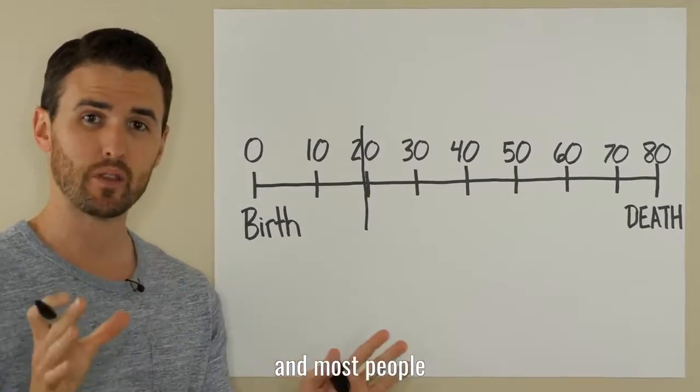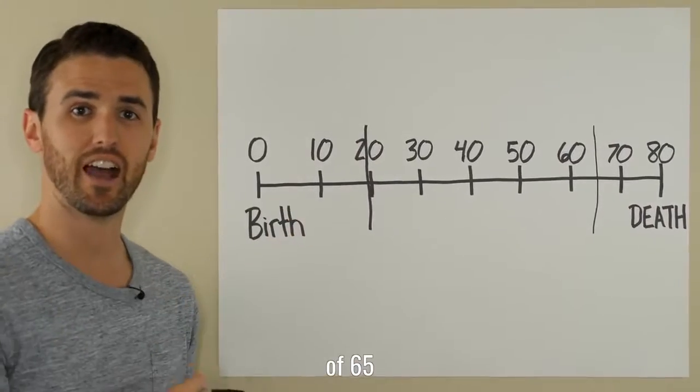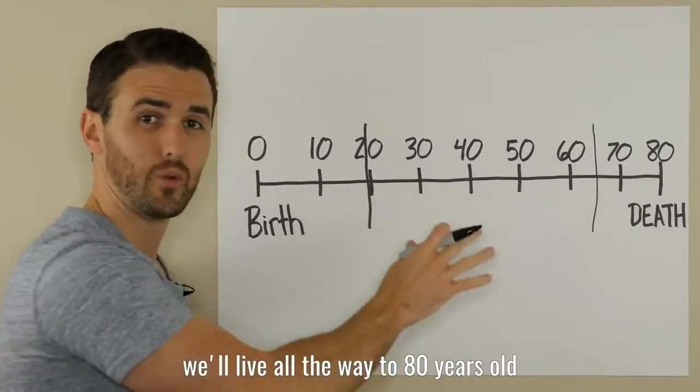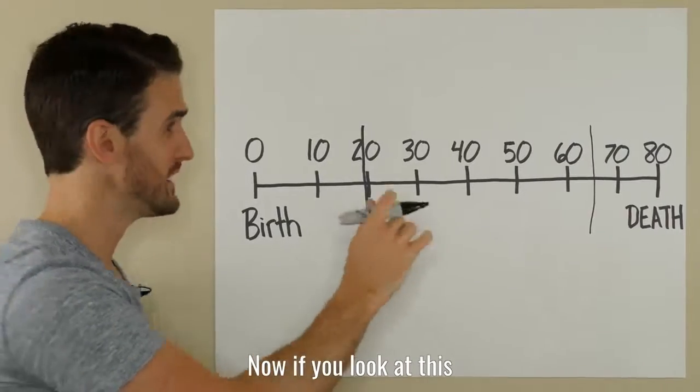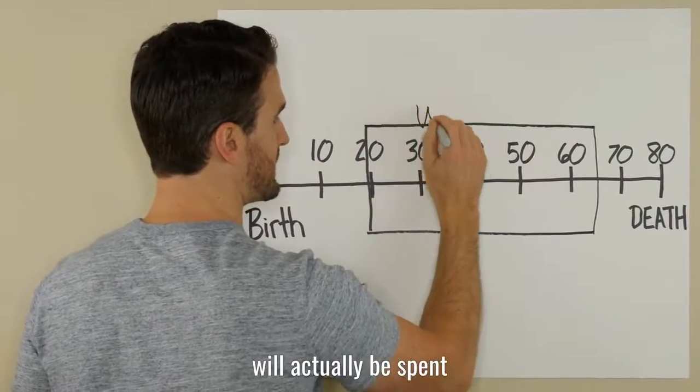At 20 years old. Most people will retire at the age of 65. Now, if we're lucky, we'll live all the way to 80 years old. If you look at this, the majority of our lives will actually be spent